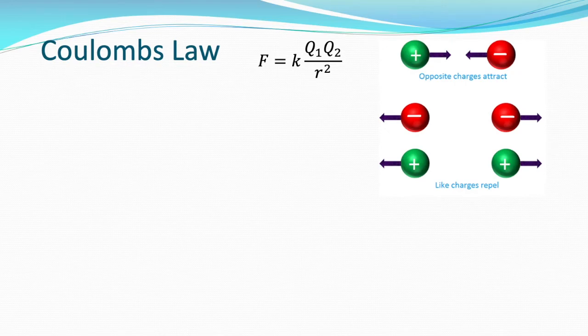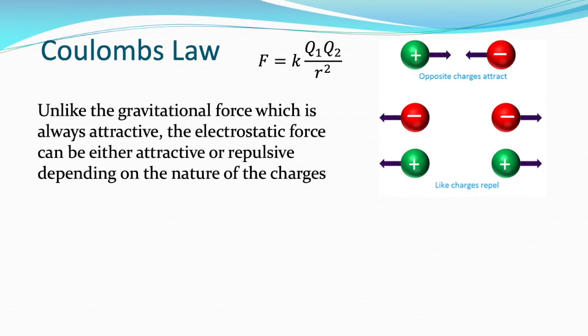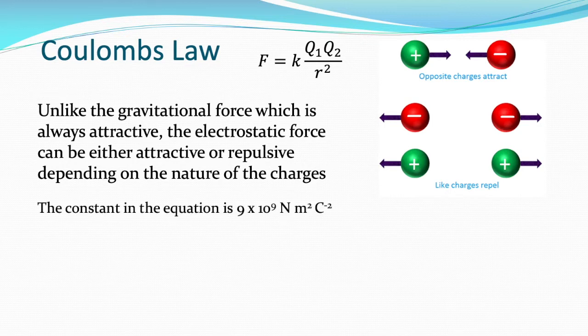Opposite charges attract and like charges repel. Unlike the gravitational force, which is always attractive, the electrostatic force can either be attractive or repulsive depending on the nature of the charges. The constant in the equation is 9 times 10 to the 9 Newton metres squared per Coulomb squared. If you rearrange the relationship to get K on its own, it will be F times R squared over Q times Q — hence Newton metres squared per Coulomb squared.